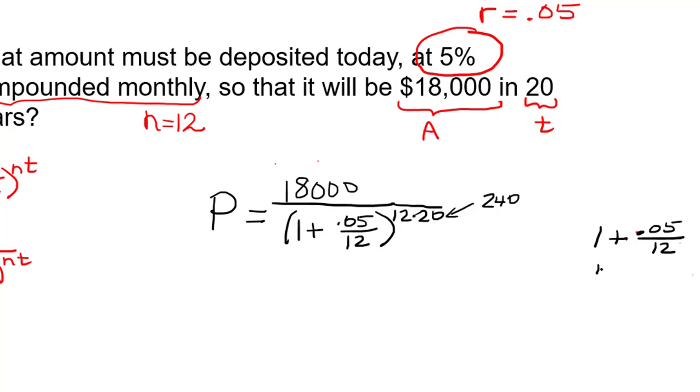But what I do is I just write the 1 as whatever the denominator is over itself. In this case, 12 over 12. And you can then have a common denominator and add these together. So instead of thinking of it as 1 plus 0.05 over 12, I'm going to think of it as 12.05 divided by 12. That way I have one operation division to put into the calculator instead of 2.